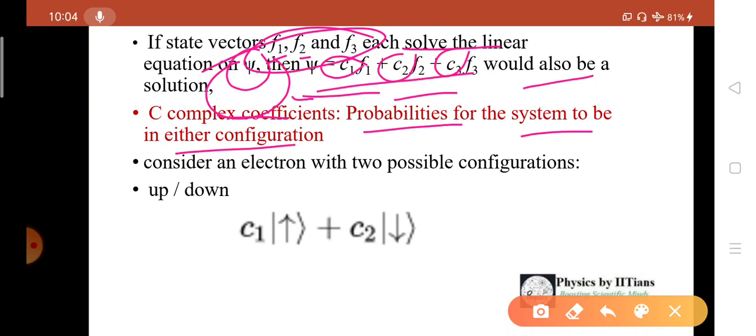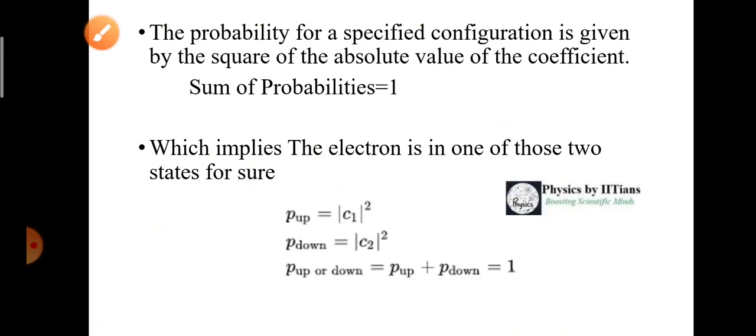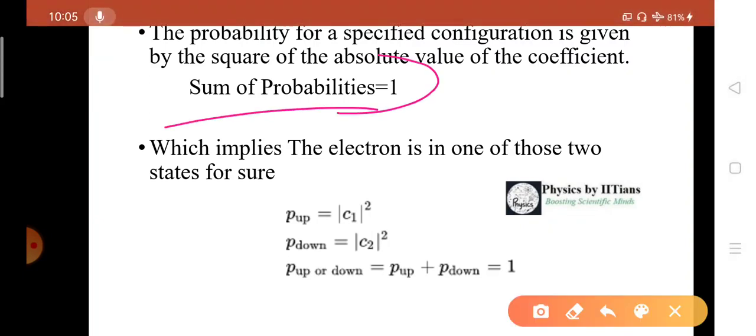Suppose we are taking an electron. An electron can have two possible configurations for its spin: either the spin can be up or down. So the spin state can be written as C1 for the spin-up state plus C2 for the spin-down state. C1 and C2 are the complex coefficients. We have to take the probability for the specified configuration, and it will be given by the square of the absolute value of the coefficient. As the sum of the probabilities equals 1, that implies the electron is either in one of the states for sure.